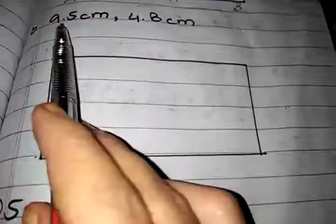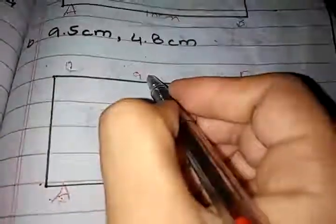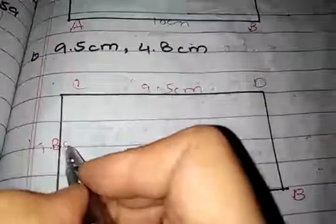Students, we can use a ruler or a protector to draw these rectangles. The next rectangle is 9.5 centimeters and 4.8 centimeters. We can denote them by capital letters A, B, C, and D. The length of AB and CD is equal to each other, 9.5 centimeters, and the length of AC and BD is equal to each other, 4.8 centimeters.